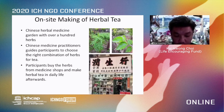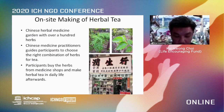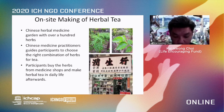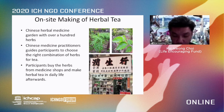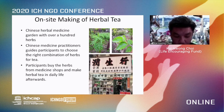The fourth domain is knowledge and practices concerning nature and the universe. The corresponding activity is on-site making of herbal teas. There is a Chinese herbal medicine garden in Yuen Long district where over a thousand herbs are planted. Chinese medicine practitioners introduce the herbs to participants and guide them to choose the right combination of herbs for teas based on the season. After attending these activities, participants are expected to know how to buy the herbs from a medical shop and make herbal teas on their own.